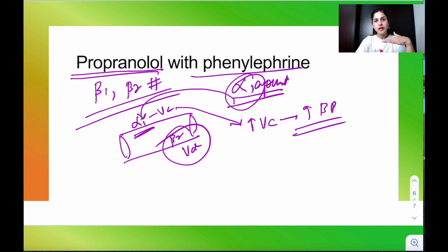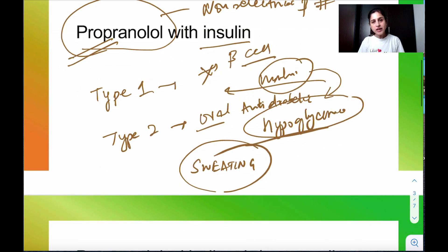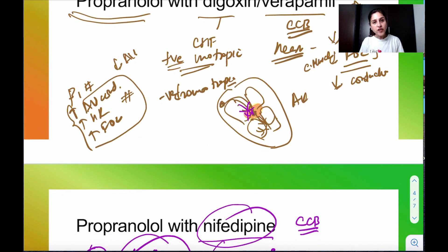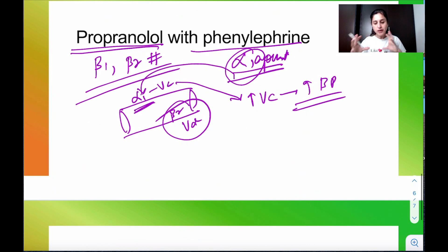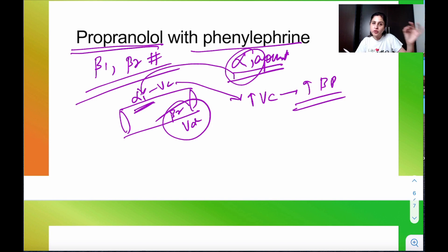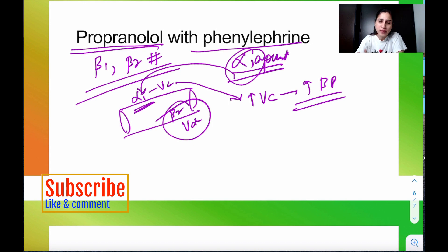To summarize the important drug interactions of propranolol: first, propranolol with insulin — masks signs of hypoglycemia; second, propranolol with digoxin and verapamil — risk of AV block; third, propranolol with nifedipine — a beneficial combination as it counteracts reflex tachycardia; and fourth, propranolol with phenylephrine — risk of hypertension. These are simple, easy to understand, and very high-yielding interactions. I hope you liked this video — please hit the subscribe button, like the video, and comment. Thank you so much.